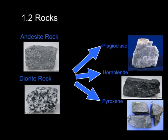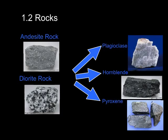Now let's look at an example that can be somewhat confusing. If you take andesite or diorite rocks, they're actually composed of the same three minerals: plagioclase, hornblende, and pyroxene. So the question is obviously, if they're made up of the same three minerals, what then makes andesite and diorite different? Why do they look different?